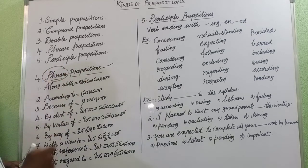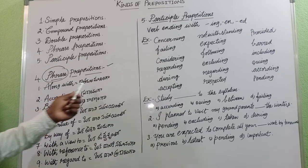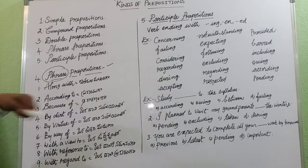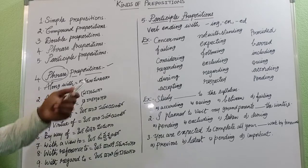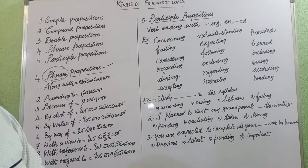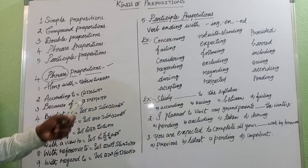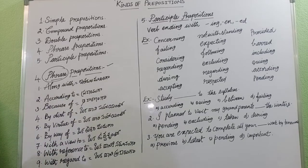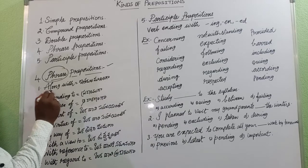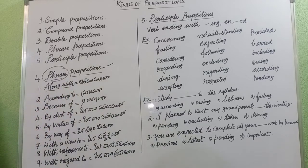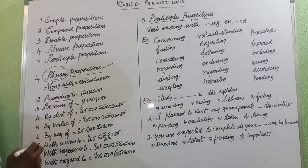Phrase prepositions are prepositions made up of a group of words. For example, 'along with' — 'I went to school along with my friends.' Another example is 'according to.'